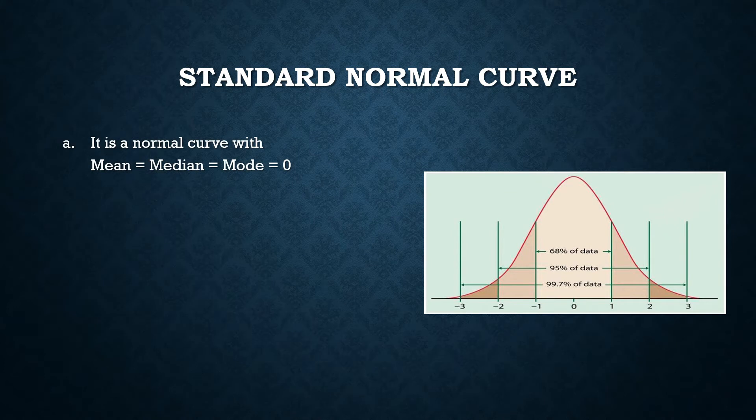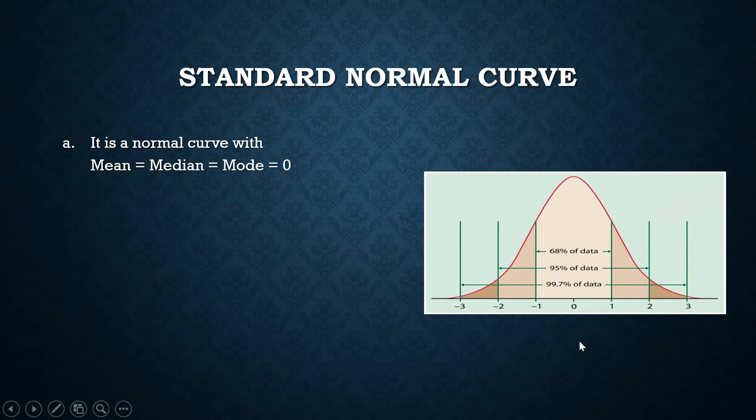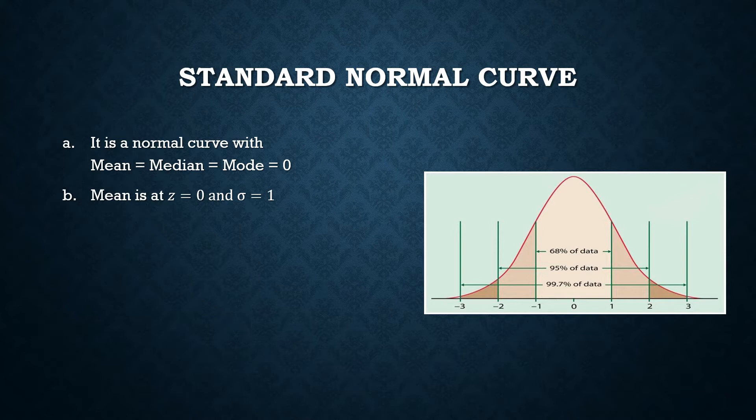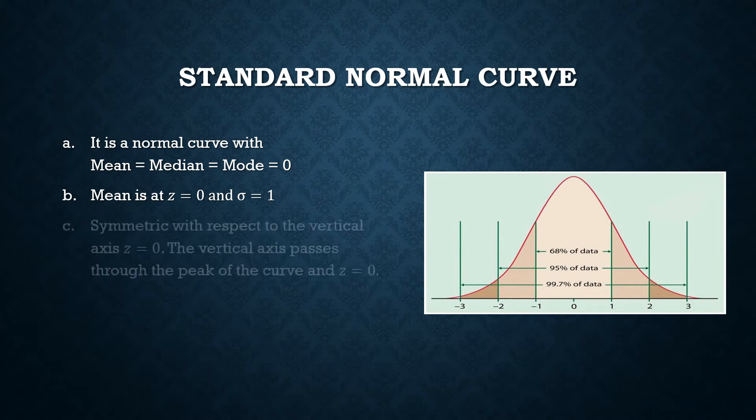And we shall lay down the characteristics of this curve. It's a normal curve whose mean, median, and mode are equal to each other, and we are setting it to be equal to 0. So the mean of the standard normal curve is 0, Z equals 0. And the standard deviation is equal to 1.